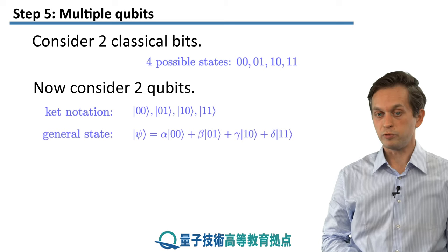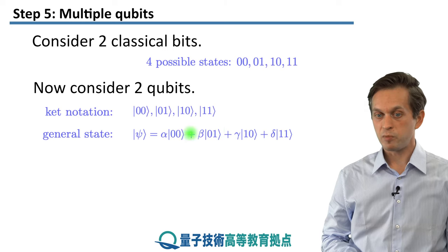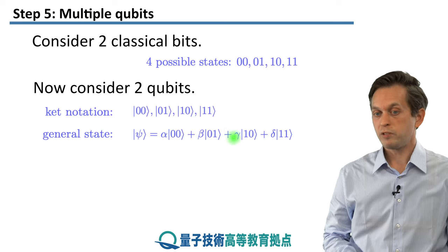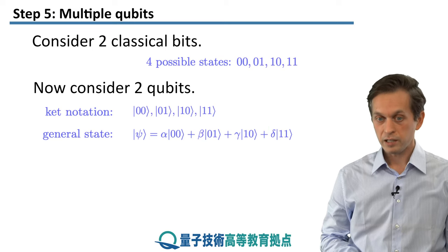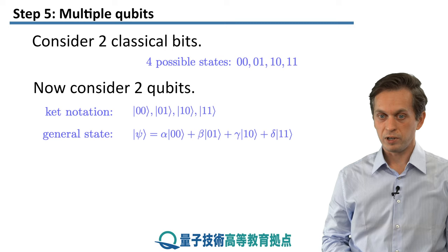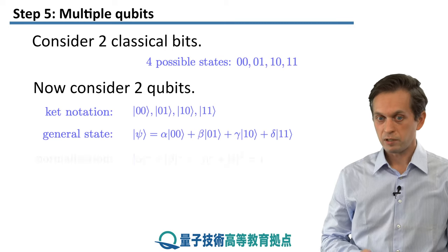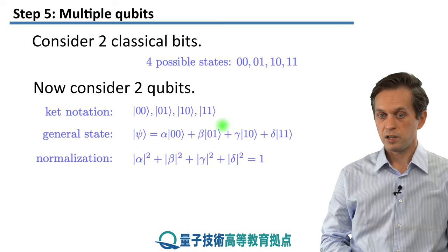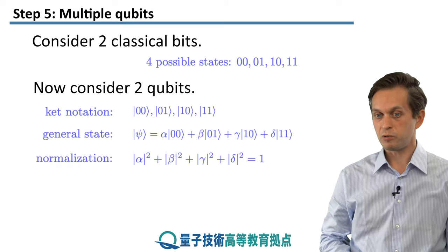Any general state of two qubits can be written as a superposition of all these states — |00⟩, |01⟩, |10⟩, |11⟩ — weighted by some probability amplitudes. This time we need four of them, alpha, beta, gamma, and delta, because we have four different states. Again, the state must be normalized such that when we measure it, it gives the correct probabilities. The normalization condition is that the sum of all probability amplitudes squared must equal 1.